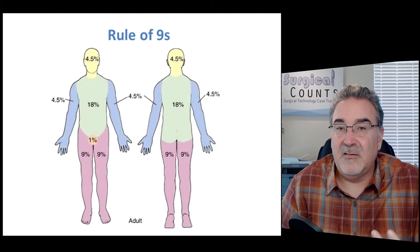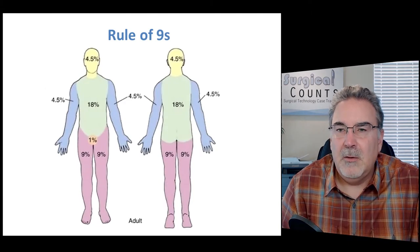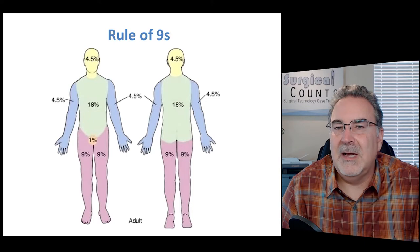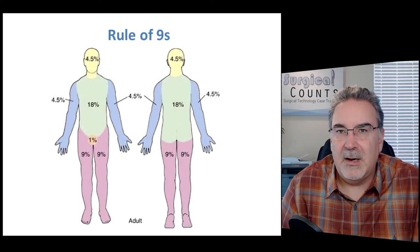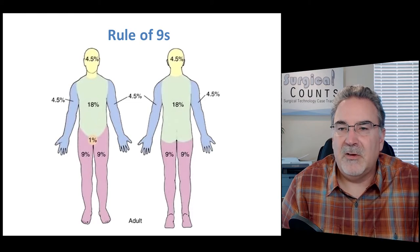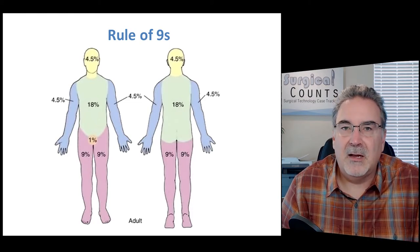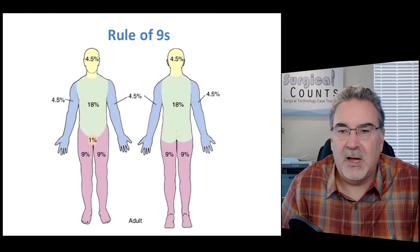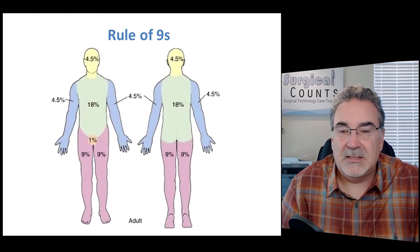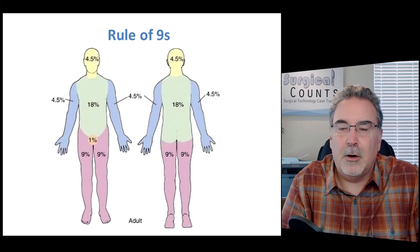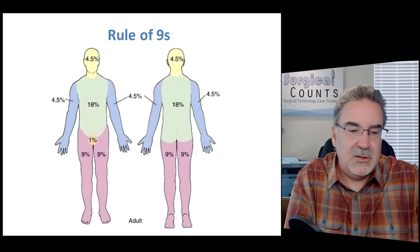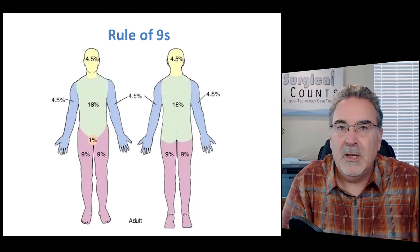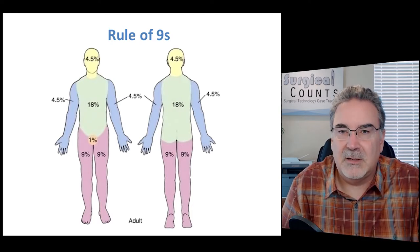To determine the extent of burns a patient may have, we use something called the rule of nines. We're talking about the percent of the body that's been burned, dividing the body into sections of nine, four-and-a-half, or eighteen. For example, the entire front section of an arm is four-and-a-half, the back is four-and-a-half, so the entire arm burned would be 9% of the body.